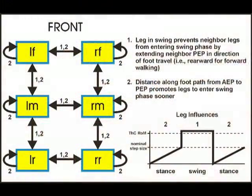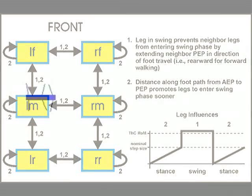A computationally simple, speed-dependent emergent gait method has also been developed to coordinate movements between the legs. This allows a continuum of gaits to form using trivial equations that can be performed by small hexapod robots using rudimentary on-board microcontrollers instead of off-board computers.